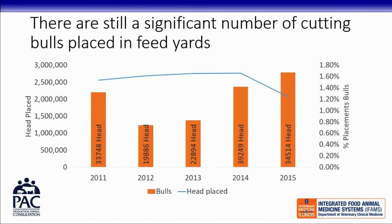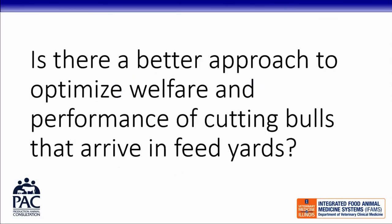We still place a lot of bulls. This data set from the Production Animal Consultation Group represents about 2.5 million head of cattle on feed — about 18% of cattle on feed in the United States — a relatively representative data set. We still place about 1 to 1.5% of cattle in feed yards with testicles when they arrive today. That's unfortunate, but it is a real clinical problem we have to deal with. How do we optimize the welfare of these animals when they show up?